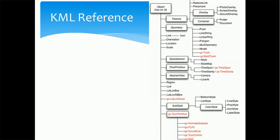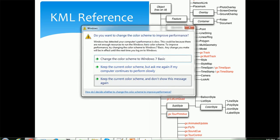This is the reference KML file. At the top you will see the object, then it will have features, geometry, style selector, time primitive, abstract view, and sub-time elements. The feature element has sub-elements like overlay and container, and overlay has attributes such as photo overlay, screen overlay, and ground overlay. Each element has sub-elements with corresponding attributes and values.